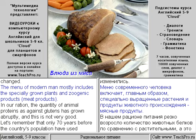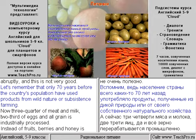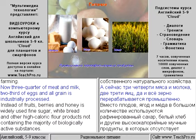The menu of modern man mostly includes specially grown plants and zoogenic products. Meat products in our ration have grown abruptly, and the quality of animal proteins as against gluten has increased — and this is not very good.